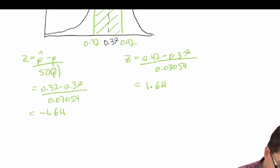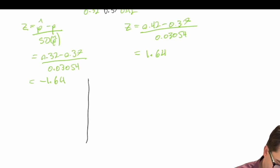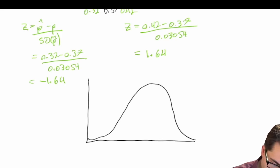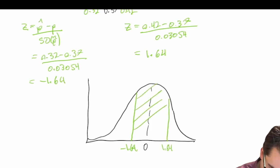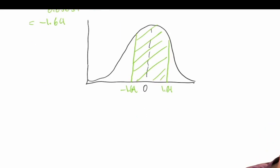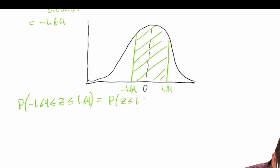We can draw our standard normal curve centered around a z-score of zero, with negative 1.64 on the left and 1.64 on the right. We're asked what is the probability that it falls between these two z-scores — that is, the probability that negative 1.64 is less than or equal to z, which is less than or equal to 1.64. This equals the probability that z is less than or equal to 1.64, minus the probability that z is less than or equal to negative 1.64.